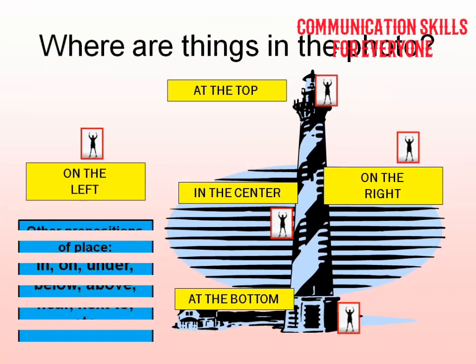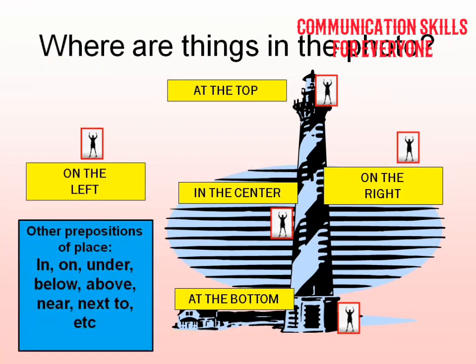You can say where things are in the photo: at the top, on the left, in the center, on the right, at the bottom. Prepositions of place you can use include: on, under, below, above, near, and next to.